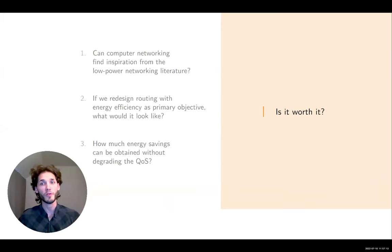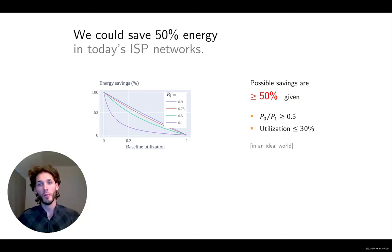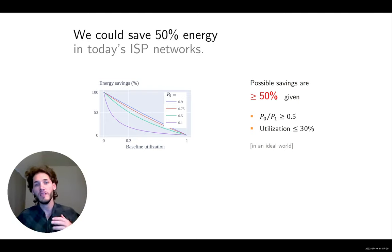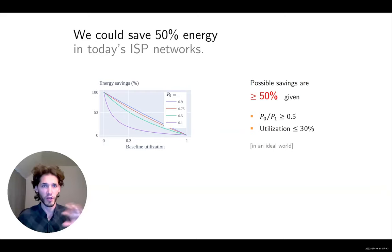Is it actually worth it? In the paper we show some simple calculations: if we look at today's typical ISP networks, devices are clearly not proportional and tend to have at least 50% of the maximal power draw as pure overhead. Utilization tends to be in the low tens of percent on average. With those numbers, you end up with more than 50% of the energy that could actually be spared. Please refer to the paper for details about the underlying assumptions.